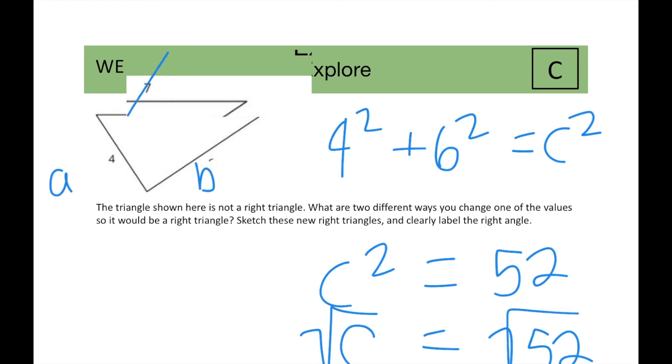You would get that C is approximately equal to seven point two units.